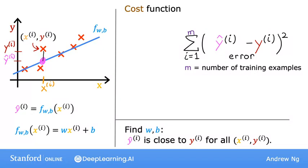So, to build a cost function that doesn't automatically get bigger as the training set size gets larger, by convention, we will compute the average squared error instead of the total squared error. And we do that by dividing by m like this. By convention, the cost function that machine learning people use actually divides by 2 times m. The extra division by 2 is just meant to make some of our later calculations a little bit neater. But the cost function still works whether you include this division by 2 or not. So this expression right here is the cost function.